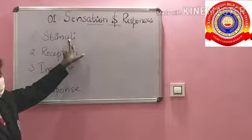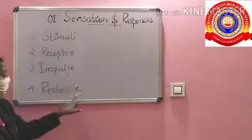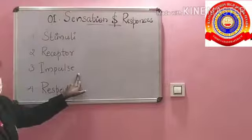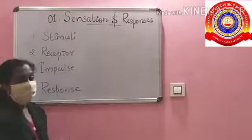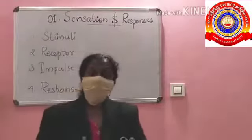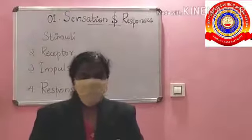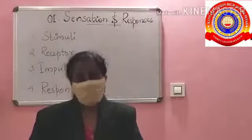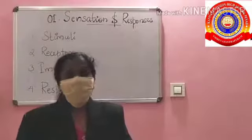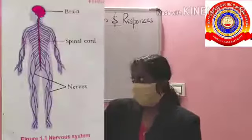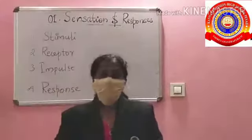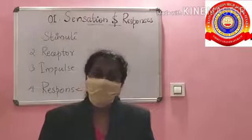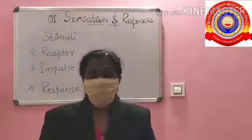The cell contains specialized receptors which receive stimuli and undergo a response with the help of impulses. All these activities are controlled by the nervous system. The nervous system controls and coordinates all life activities. The nervous system is classified into the brain, spinal cord, and nerves. Next class we will learn the structure and function of neurons.